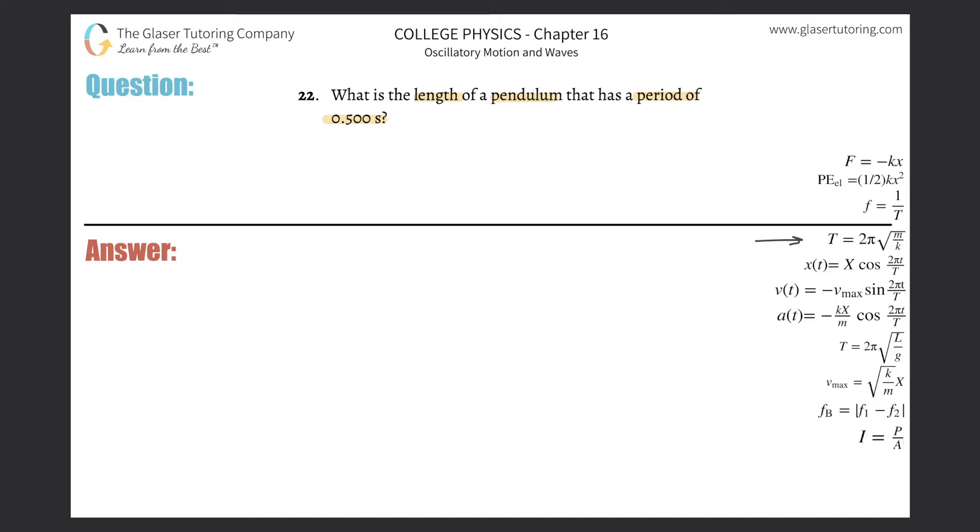This formula, T equals 2π times the square root of m over k, is used for simple harmonic motion. That's basically used for objects that have elastic or spring-like tendencies.